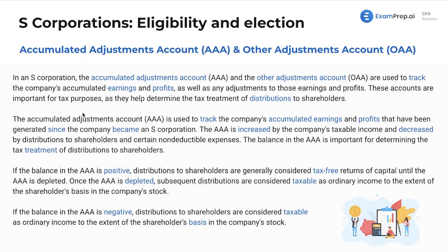These accounts are important for tax purposes, as they help determine the tax treatment of distributions to shareholders. The AAA account is used to track the company's accumulated earnings and profits that have been generated since the company became an S Corp. The AAA is increased by the company's taxable income and decreased by distributions to shareholders and certain non-deductible expenses.